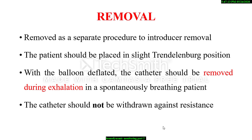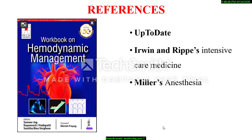Regarding removal: the pulmonary artery catheter can be removed as a separate procedure from the introducer removal. For subclavian or jugular catheter removal, the patient should be placed in slight Trendelenburg position. With the balloon deflated, the catheter should be removed during exhalation in the spontaneously breathing patient, or during inspiration in the patient undergoing positive pressure ventilation — this is to prevent air embolism. The catheter should not be withdrawn against resistance, as this may indicate that the catheter is entangled in cardiac structures. Following catheter removal, the introducer can be used as a central venous catheter for administration of fluids and medications if necessary, or it can be replaced with a fresh central venous catheter or removed completely.